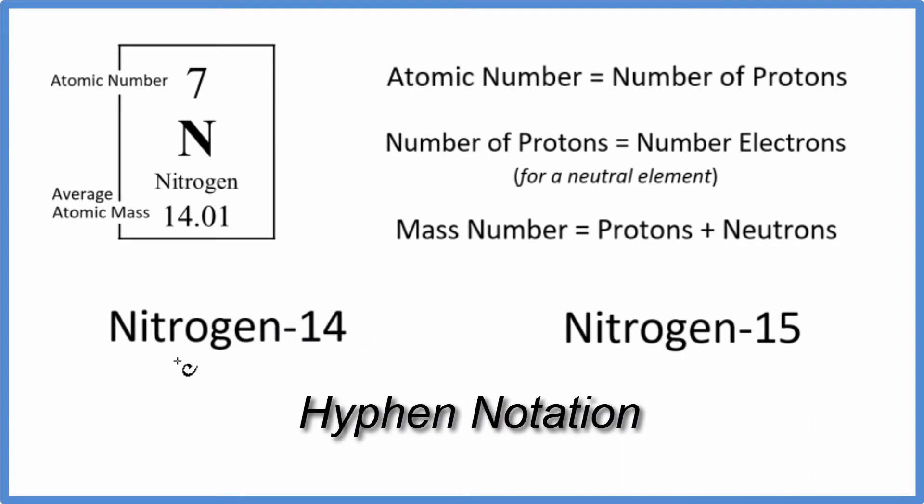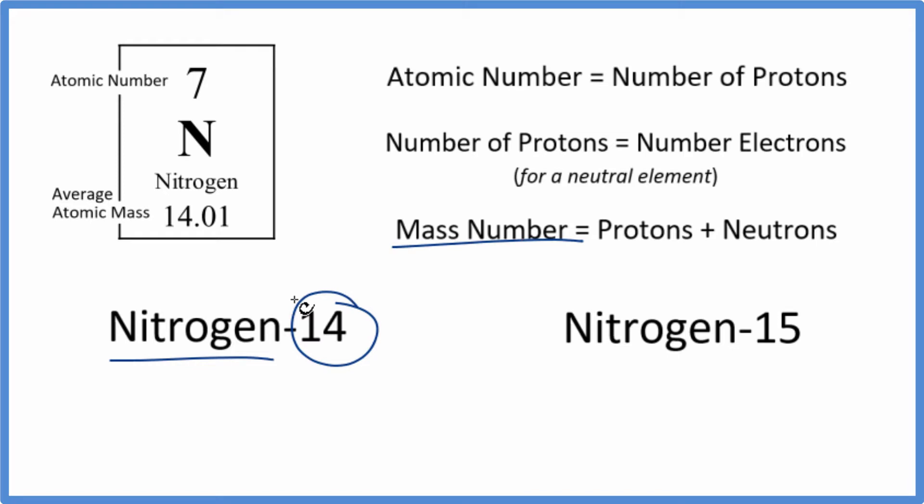In hyphen notation we write the name of the element or sometimes just the symbol, and then this number is called the mass number. This is the mass number for nitrogen. We have two primary isotopes of nitrogen, nitrogen-14 and nitrogen-15.